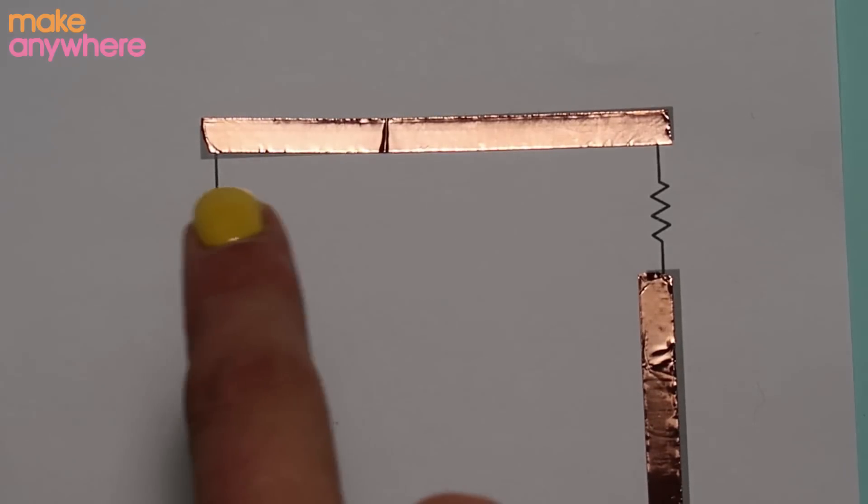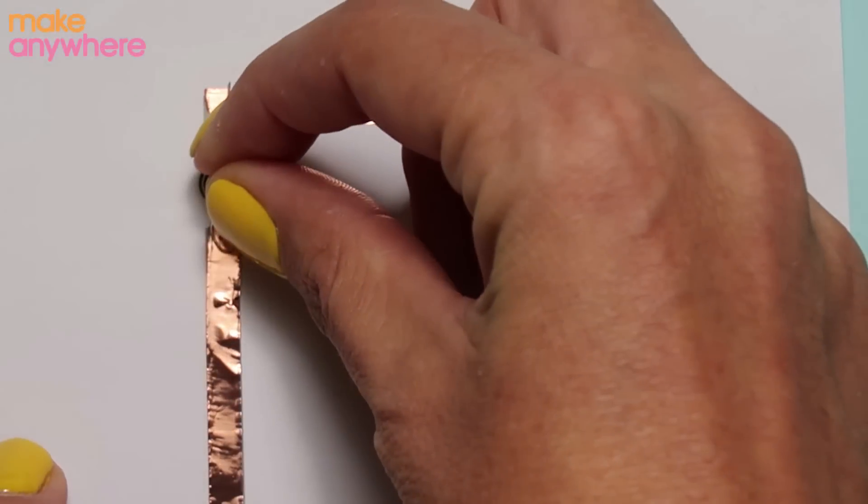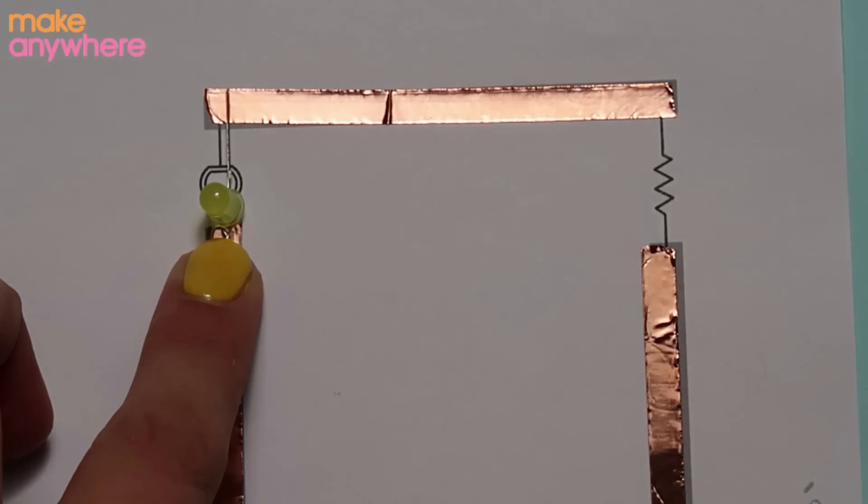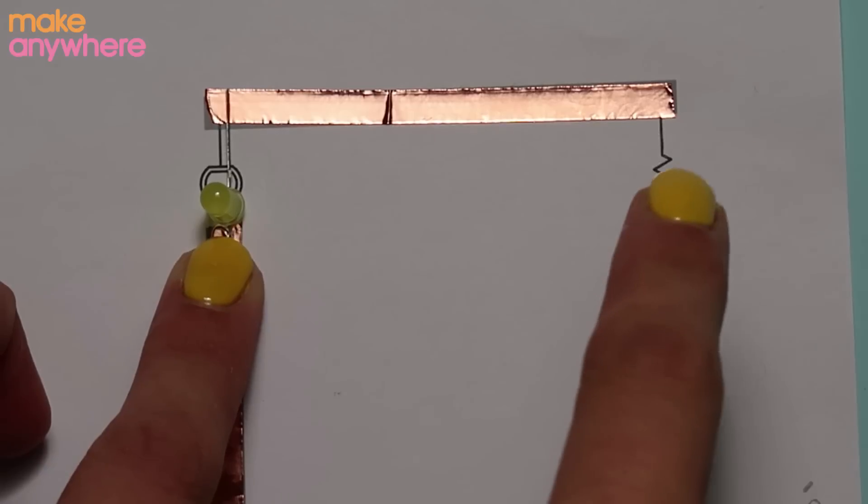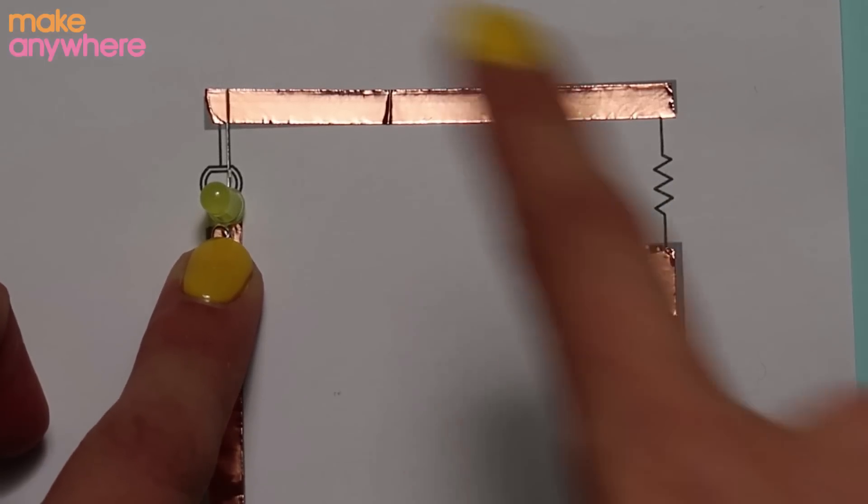Now we're ready to add our components, our LED and our resistor. Your components sit on top of the copper tape, not underneath. Underneath is the glue which will be an insulator so it won't allow the power to run through it.